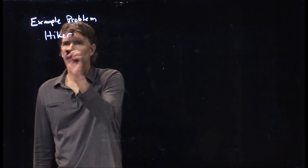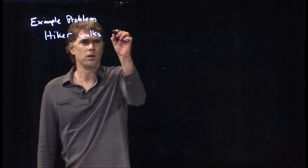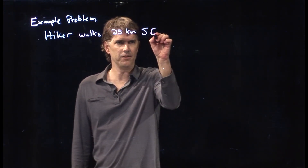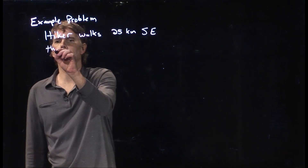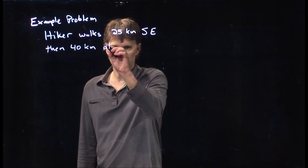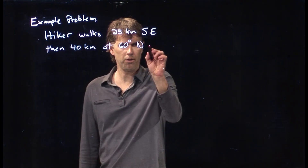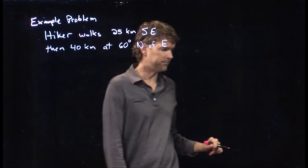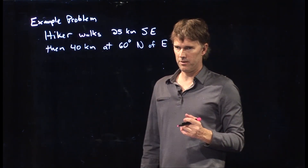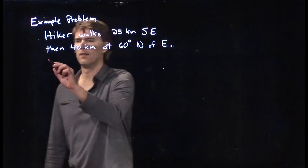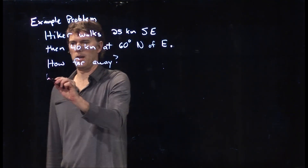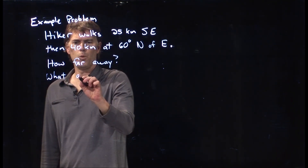The hiker walks 25 kilometers southeast, and then 40 kilometers at an angle 60 degrees north of east. How far are they from the start and at what angle — how far away are they and in what direction?